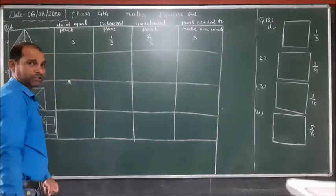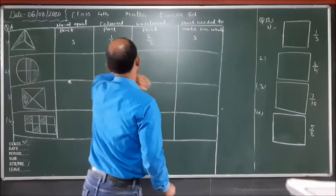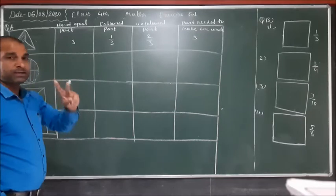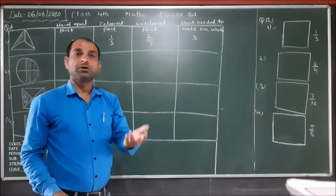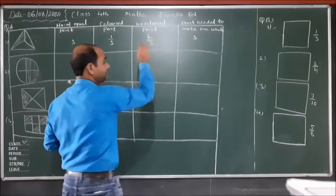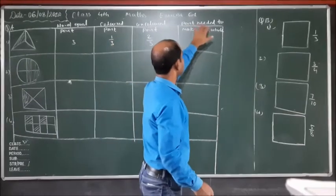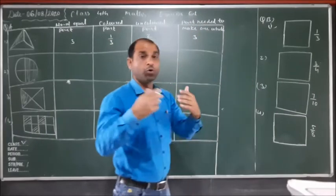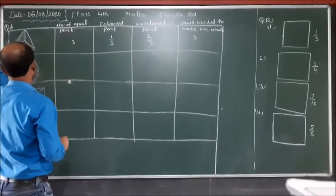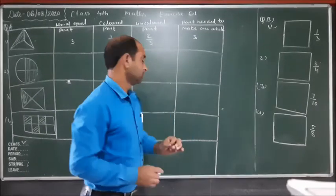For the uncolored part: one, two parts are uncolored out of three parts, so we write two upon three. For parts needed to make a whole — a whole is the complete figure — three parts are needed, so we write three.